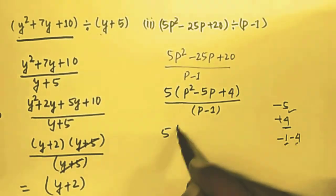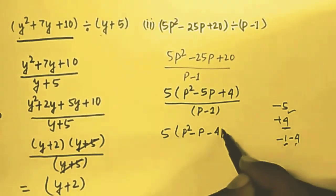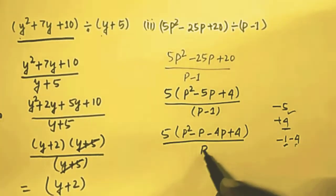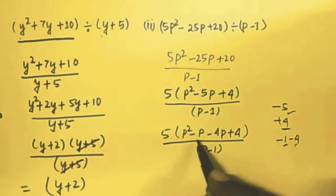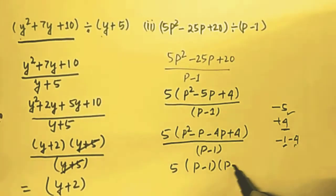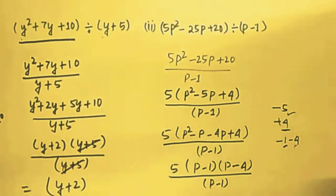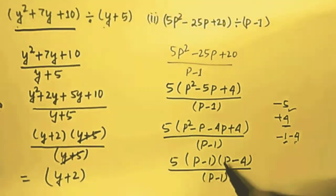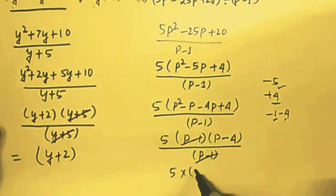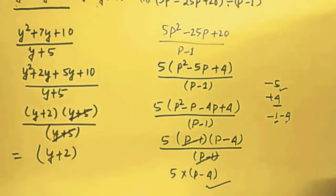So we get 5 multiplied by (p² − p − 4p + 4) divided by (p − 1). Factorizing gives 5(p − 1)(p − 4) divided by (p − 1). Now (p − 1) and (p − 1) cancel out, and the remaining part is 5(p − 4), which is the answer. I hope you are getting it.